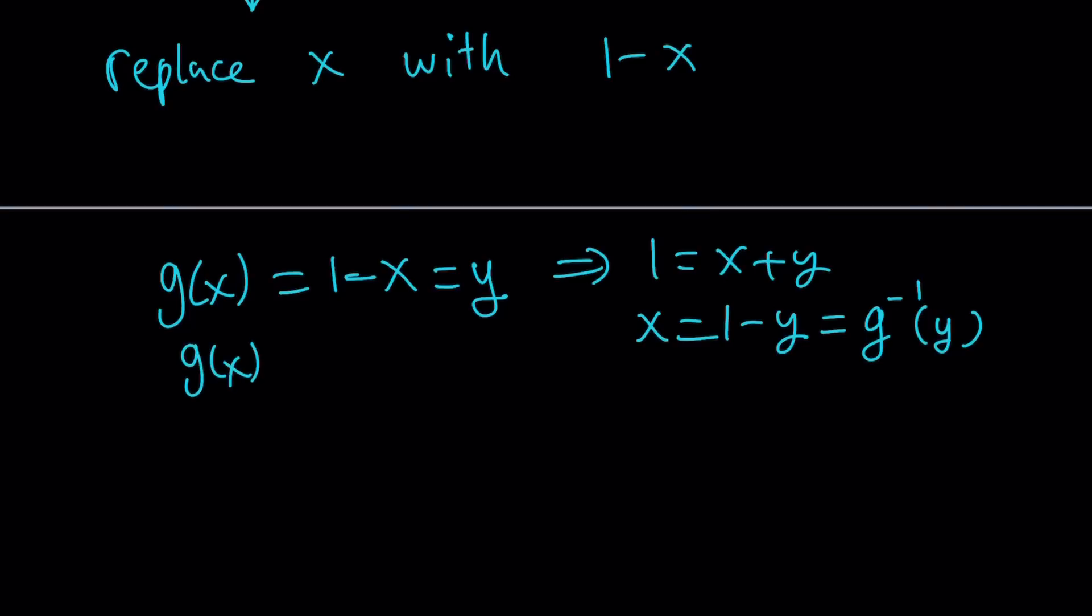But x equals 1-y is just g inverse of y, because we replace x and y. So g(x) equals y, we apply g inverse on the left, and you get this from here.